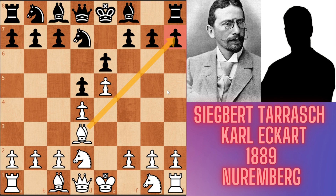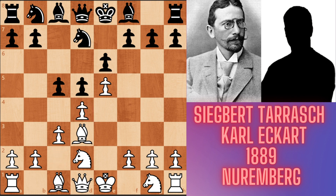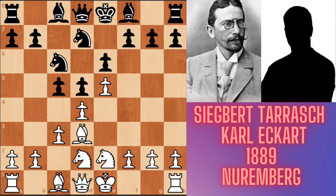The Bishop is now looking at the h7 pawn. If Black castles short, White's plan may be a Greek gift sacrifice on h7. Now Black played c5, attacking the d4 pawn. Tarrasch played c3, defending the pawn and also clearing squares for his Bishop. Knight c3 — developing the Knight to e2 instead of f3, the natural development square.